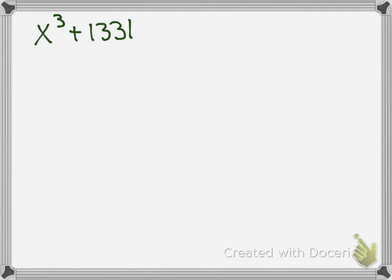So let's look at the first example. For my first example, I've got x cubed plus 1,331. If you go back to that paper that you just had on the cubes, you would recognize that 1,331 is 11 cubed. So we're going to start this off. First off, because this is a plus, I'm going to go plus, minus, plus.